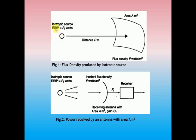This transmitter antenna is spherical in shape, which radiates the amount of power PT in watts as EIRP - effective isotropic radiated power. It radiates the power in all directions 360 degrees, which is why it is called an omnidirectional antenna. The area of this particular transmitting antenna is A meter square, and the receiver antenna is separated from the transmitter antenna at a distance R in meters.